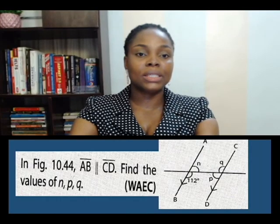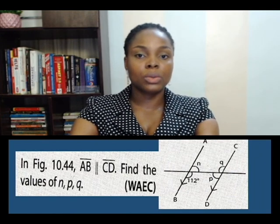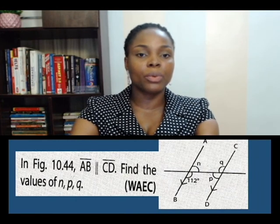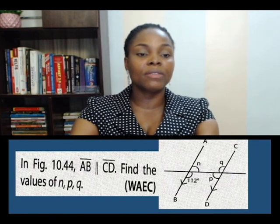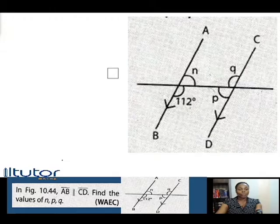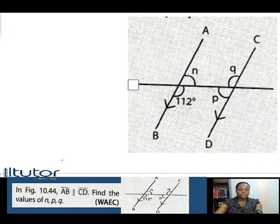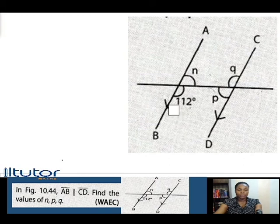This next question is on page 168 of Functional Mathematics for Senior Secondary Schools by T.M. Asiro. The question says: in figure 10.44, line AB is parallel to line CD. Find the values of N, P, and Q. These are the two parallel lines, line AB and line CD. This unnamed straight line is a transversal line cutting across these two parallel lines AB and CD.